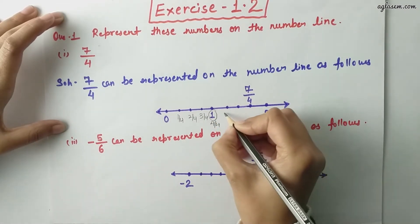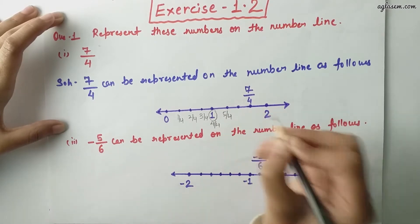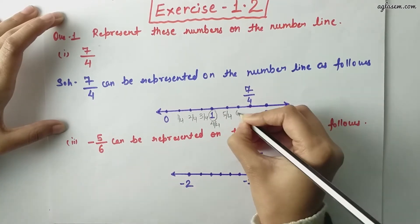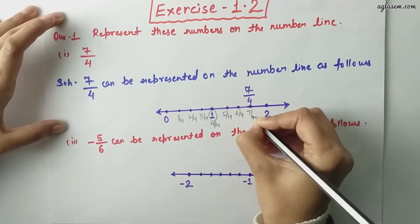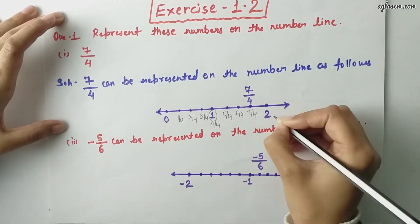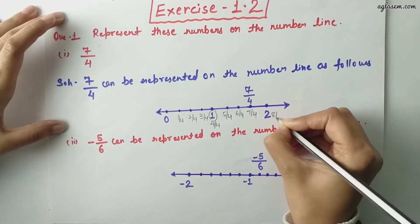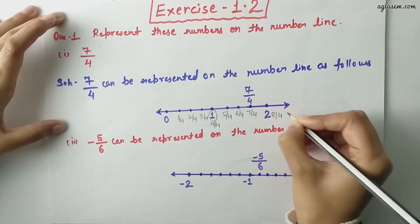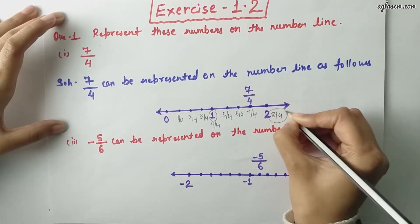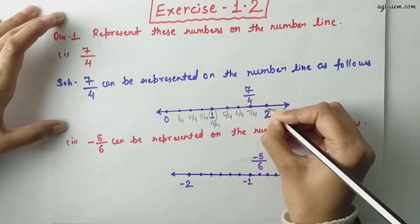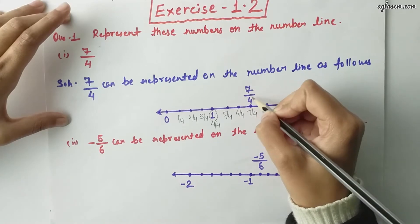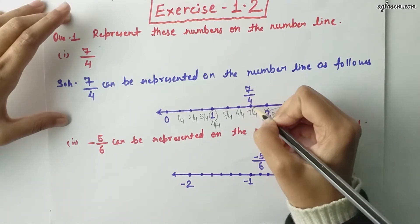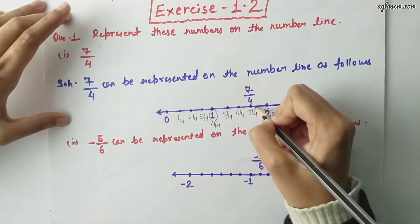Now write 5 by 4, 6 by 4, 7 by 4, and 8 by 4, and 8 by 4 equals 2. So 7 by 4 lies here on the number line.